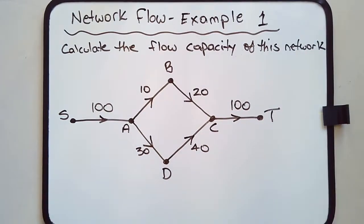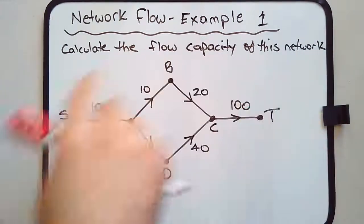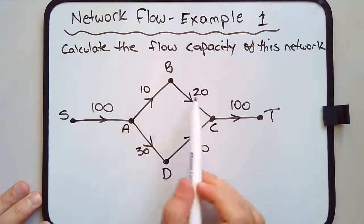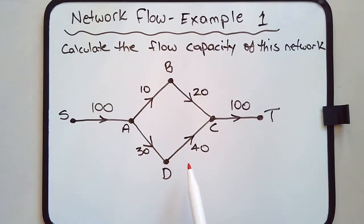What we're going to do is calculate the flow capacity of this entire network. Now, these are interesting numbers: 10, 20, 30, 40. If you add those up, you get 100. But let's calculate the flow capacity because you may find that it could actually be less than 100.